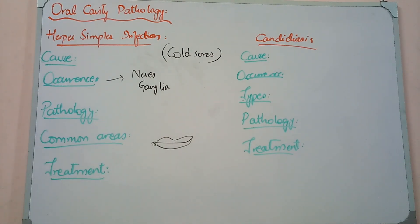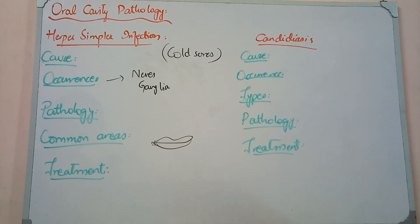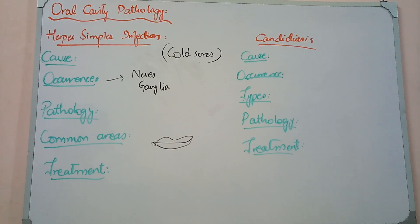Secondary infection means the first infection recurs. Why does it recur? Extreme stress conditions, immunocompromised states, low immunity, or fever exposure — any condition that reduces your immunity can basically reactivate herpes simplex.